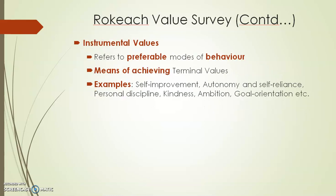Next are instrumental values. Instrumental values are basically how you will achieve your terminal values — they are the means of achieving them. They are the preferable modes of behavior: how you need to behave, how hard you need to work, how you need to operate in order to achieve your terminal values. For example, self-improvement — always learning, always growing, improving yourself every year. Another instrumental value is autonomy and self-reliance — taking control of your own life. Some people value discipline: sleeping on time, waking on time, being very punctual. Others value kindness, ambition, and goal orientation.